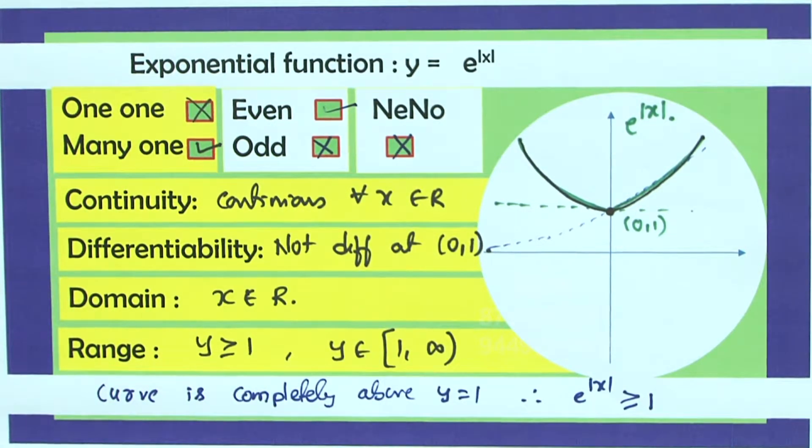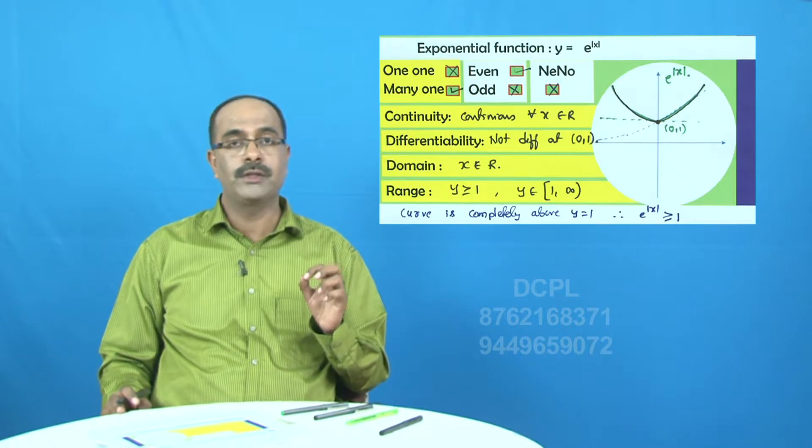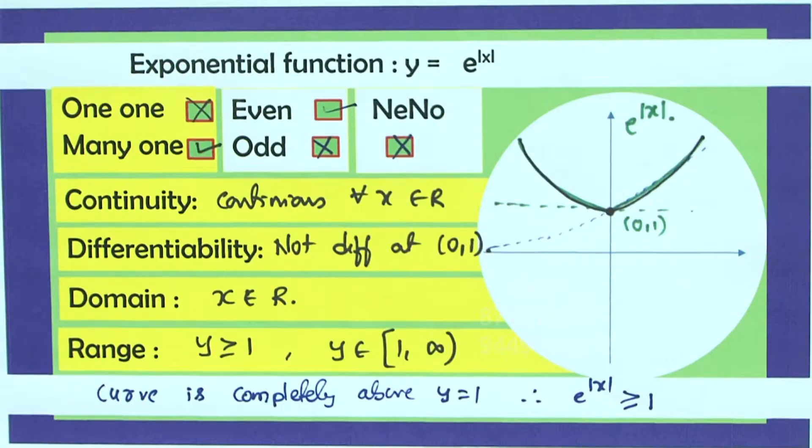So e power mod x is a special kind of function which is not differentiable at x is equal to 0. And if you are indeed understanding this, dear students, please make a note of this.